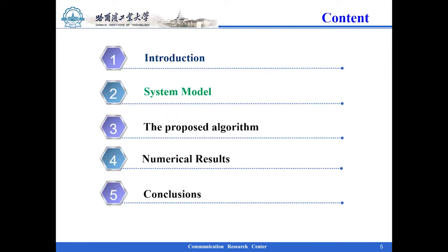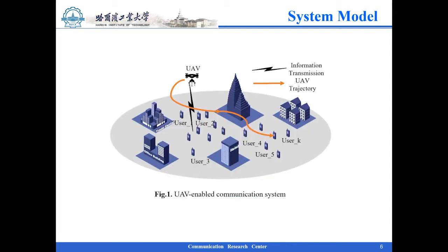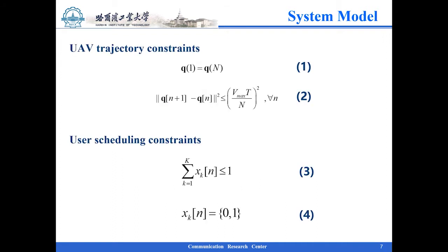Section 2: System Model. Here, you can see a figure which shows the process of information transmission between a single UAV with a single antenna and multi-users with a single antenna on the ground. System model constraints are divided into two parts. UAV trajectory constraints indicate that the UAV returns to its starting point during the period and the speed of the UAV in each time slot cannot exceed its maximum flying speed. User scheduling constraints state the UAV can only connect to one user in each time slot.